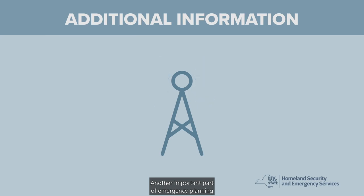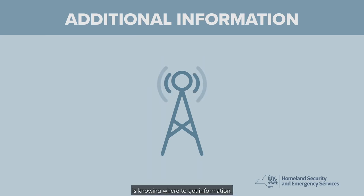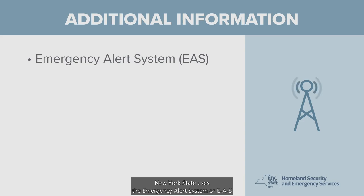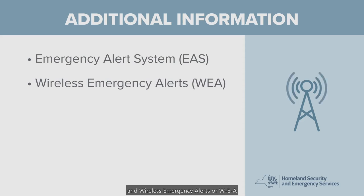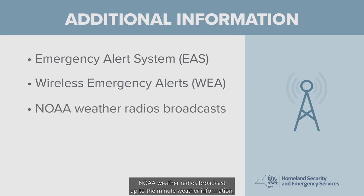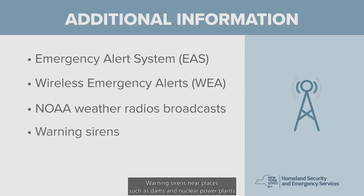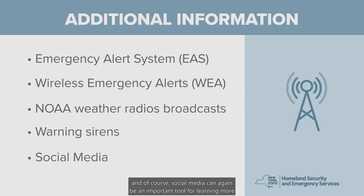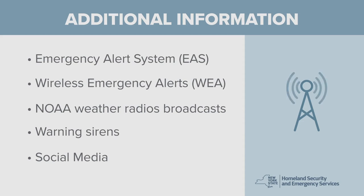Another important part of emergency planning is knowing where to get information. New York State uses the Emergency Alert System (EAS) and Wireless Emergency Alerts (WEA) to provide critical information to people in an emergency. NOAA weather radios broadcast up-to-the-minute weather information, so it's good to have one on hand. Warning sirens near places such as dams and nuclear power plants are designed to alert nearby residents of emergencies involving those facilities. And social media can again be an important tool for learning more about an emergency.